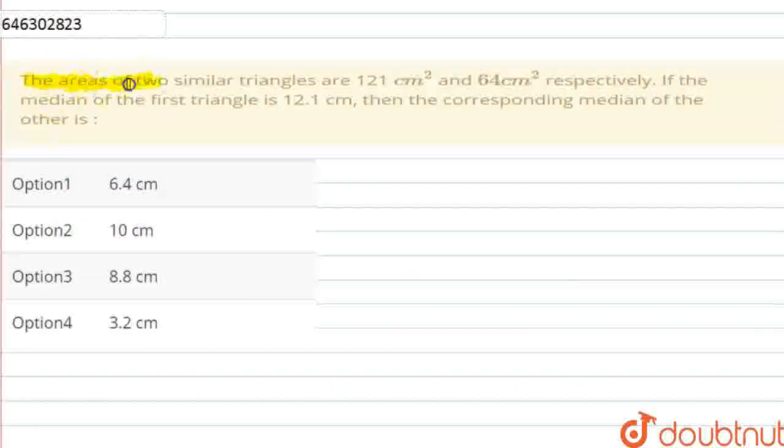The areas of two similar triangles are 121cm² and 64cm² respectively. If the median of the first triangle is 12.1cm, then the corresponding median of the other triangle is: